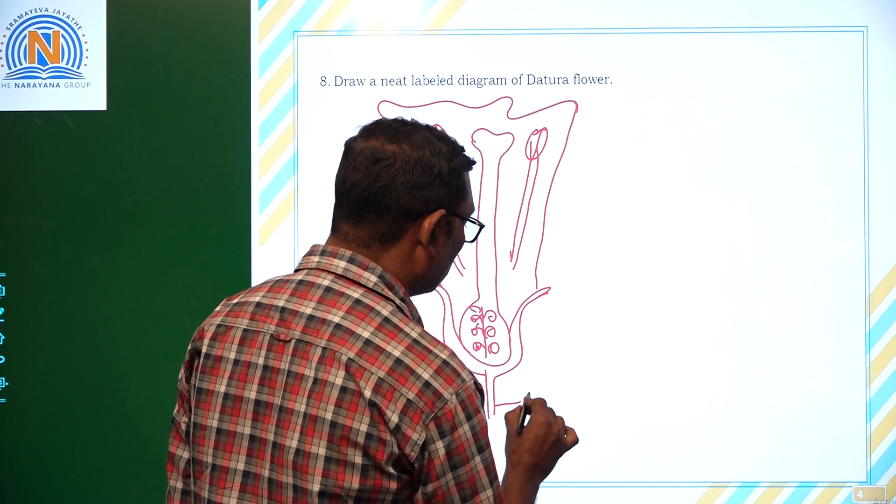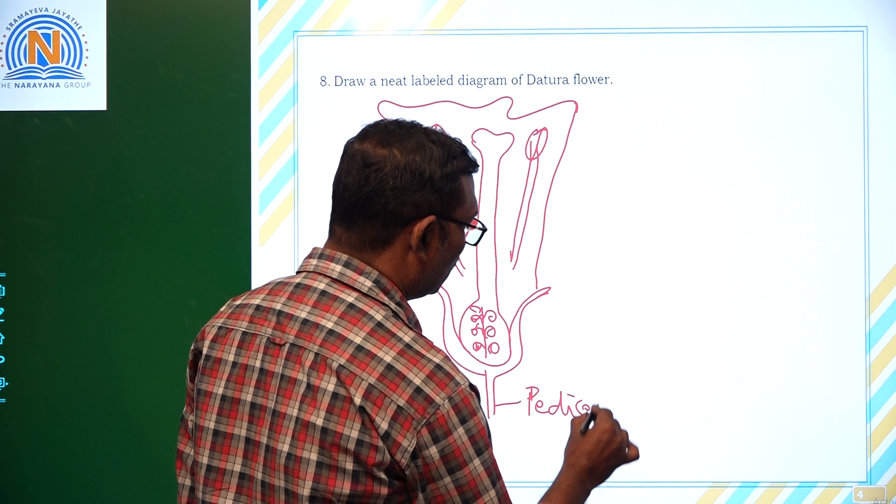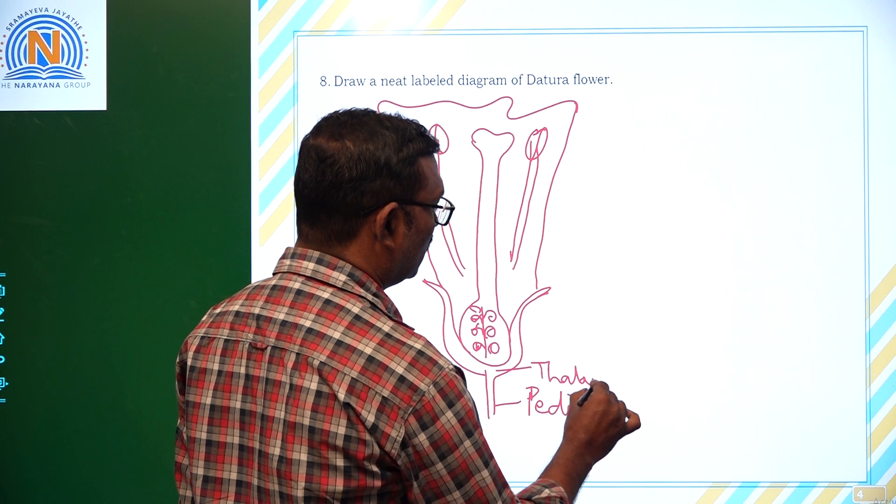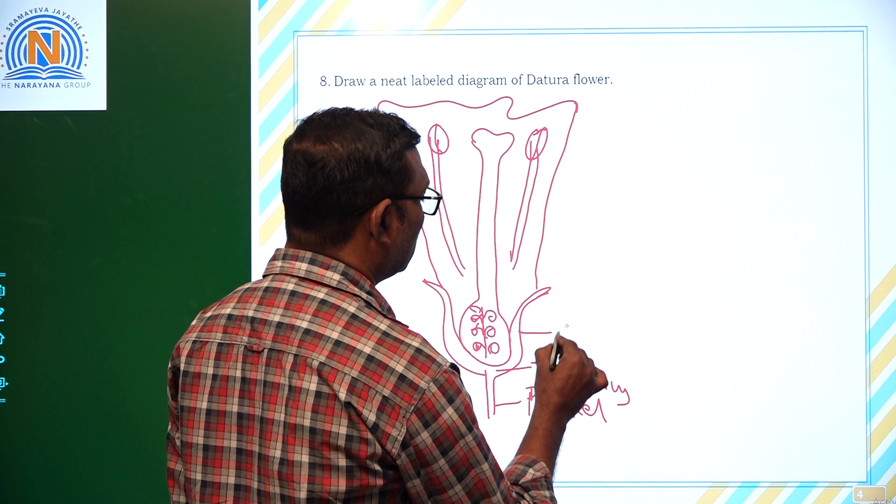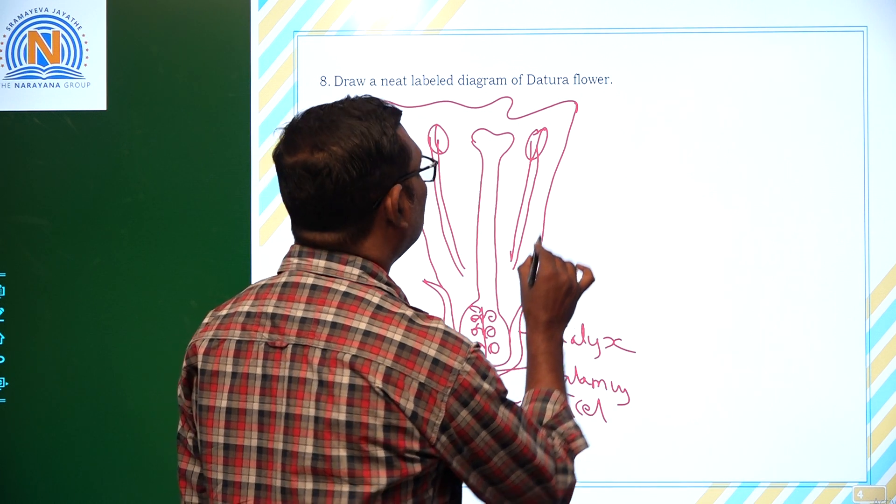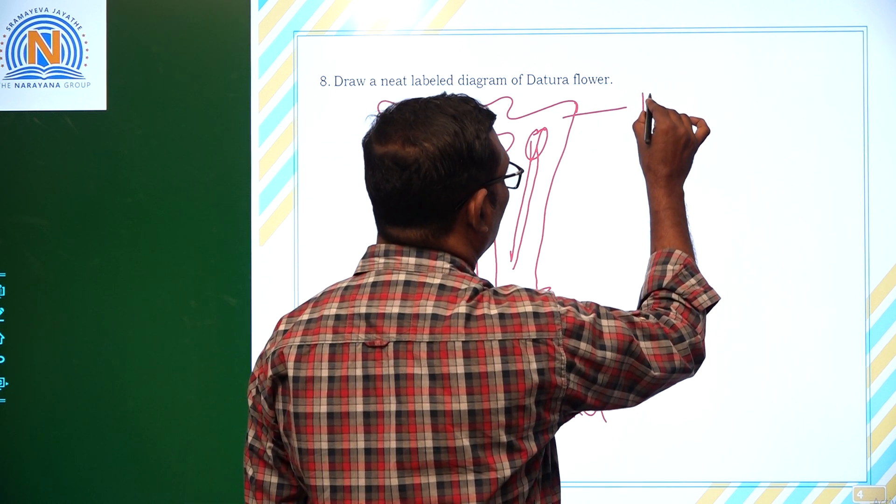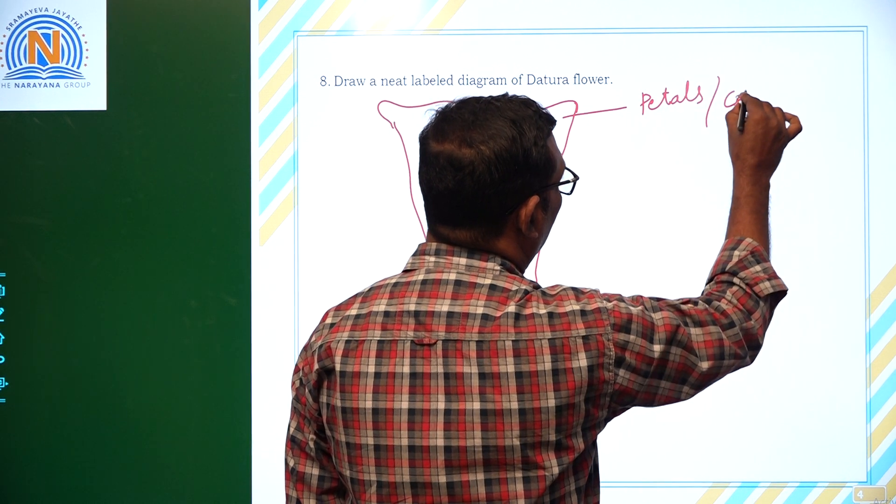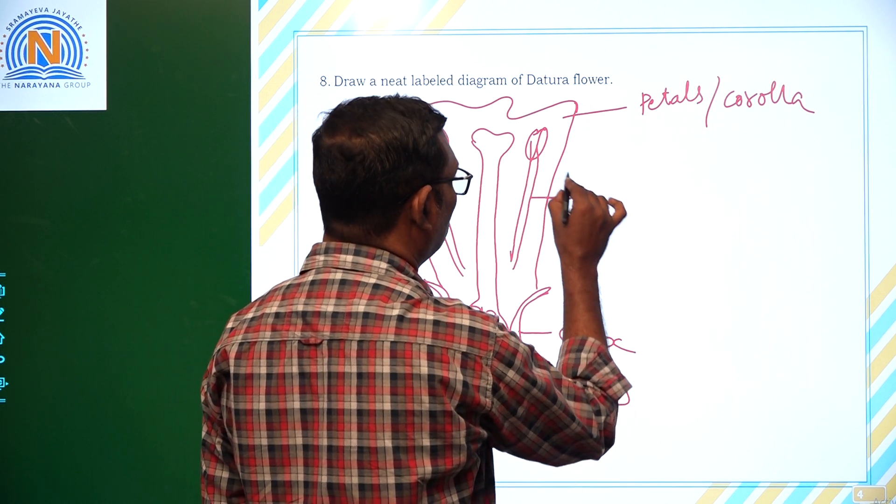Now let us write parts. This one is pedicel. This one is thalamus. And these are green color structures called calyx or otherwise called sepals. And these are attractive structures they are called petals or corolla.